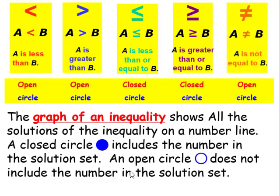A closed circle includes the number in the solution set. An open circle does not include the number in the solution set. When we see a less than or greater than symbol, we're going to have open circles because we are not including the number in the solution set — we don't have an equal to sign. But when we see a less than or equal to or greater than or equal to, we will have closed circles because we're including that number in the solution set.